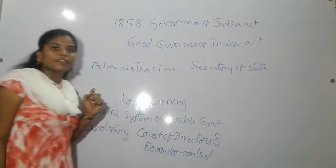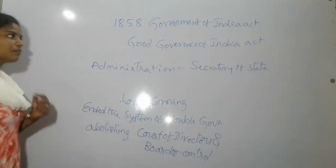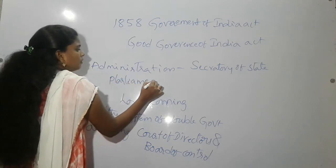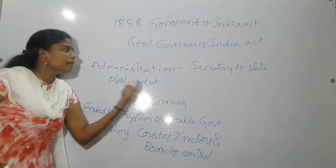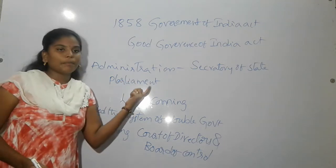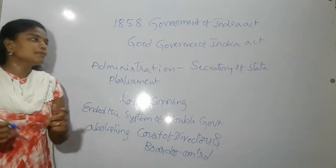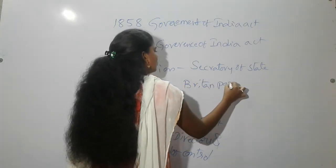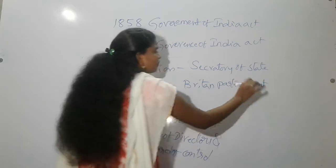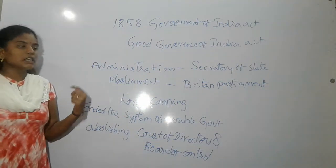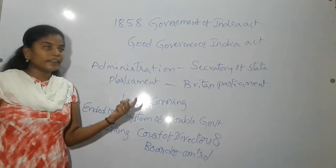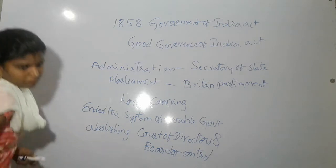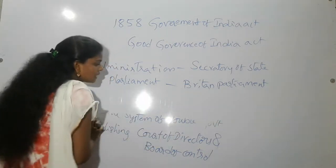The Secretary of State was a member of the British Parliament, and was ultimately responsible to the British Parliament. The 15-member council helped the Secretary of State in administration, and the Secretary of State was made the council chairman.